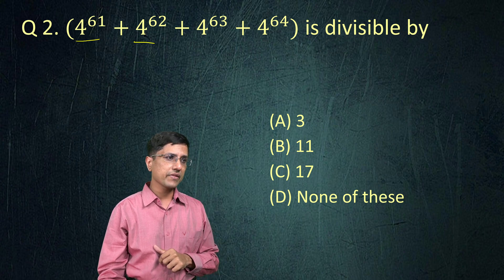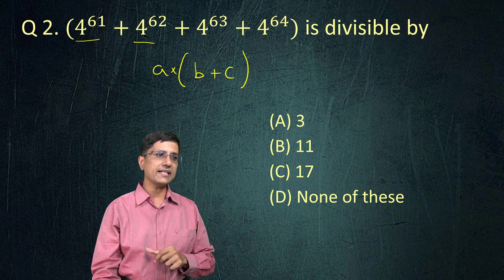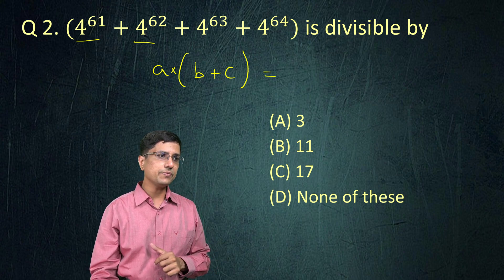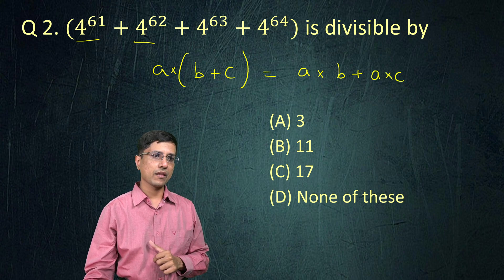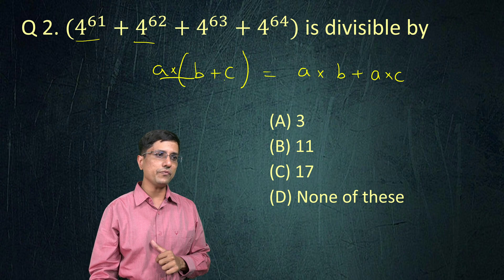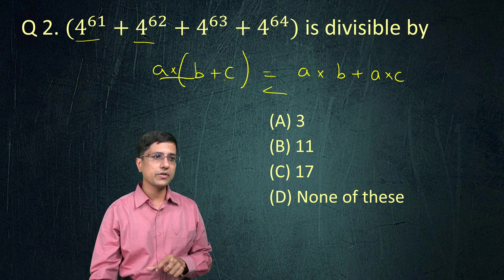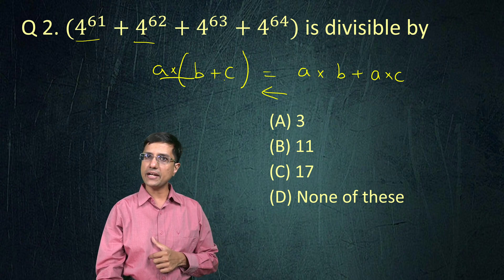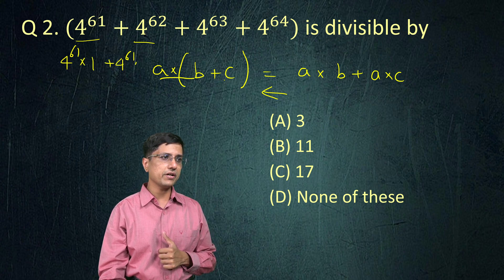What does it say? It tells me that if I have three numbers a, b and c, and I write it as a into (b plus c), then this multiplication actually distributes over addition. I will multiply a with each of these numbers and then add. Now let's apply this property in reverse. I can write the first term as 4 raised to power 61 into 1, plus 4 raised to power 61 into 4.